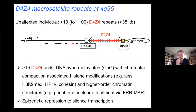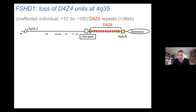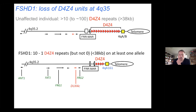Regarding the genetics underlying FSHD, just very briefly: at the end of chromosome 4 there are D4Z4 repeats. In the healthy population there are up to 150 of them, and they become very hypermethylated and epigenetically repressed. In FSHD type 1, you lose these units — you have roughly fewer than 10 — and you have epigenetic derepression.